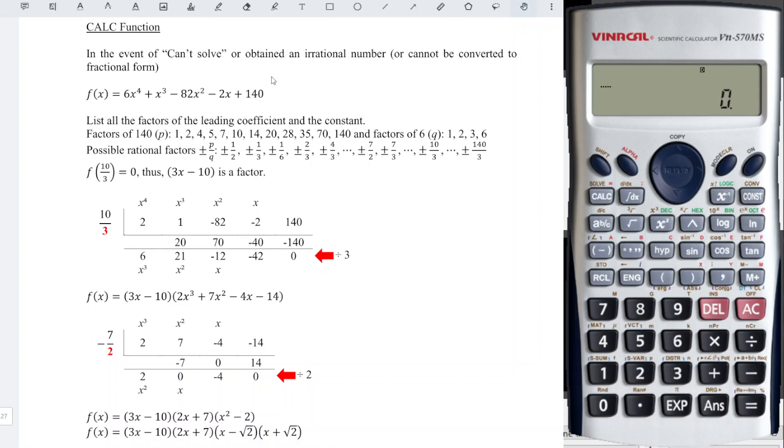First, let's key in the function as given. We have 6x^4 + x^3 - 82x^2 - 2x + 140.